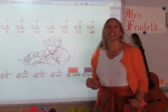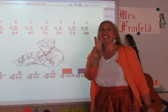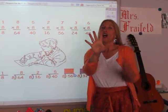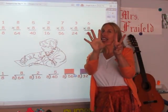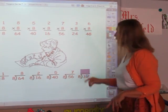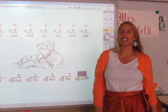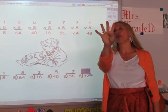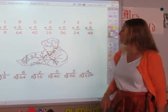I'm going to sing the eight song until I get to 56. 8, 16, 24, 32, 40, 48, 56. The answer is seven. And the last one I'm singing the eight song until I get to 32. 8, 16, 24, 32. Four fingers. That's the answer.